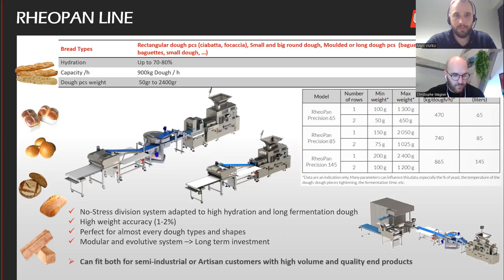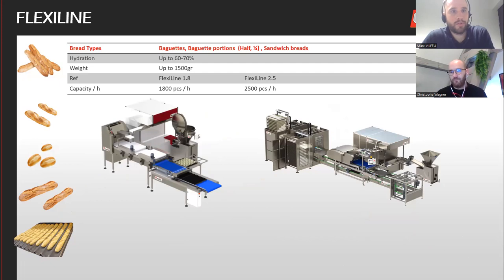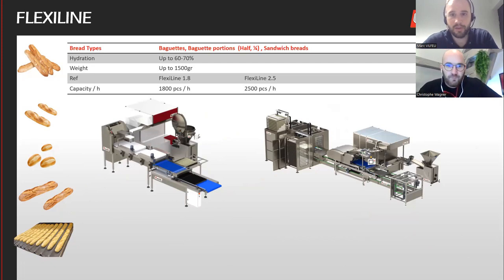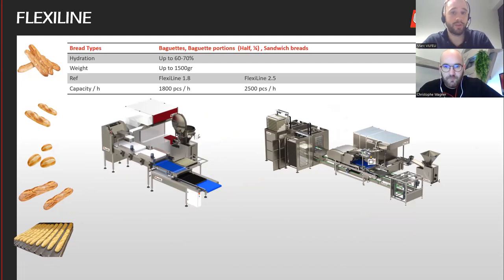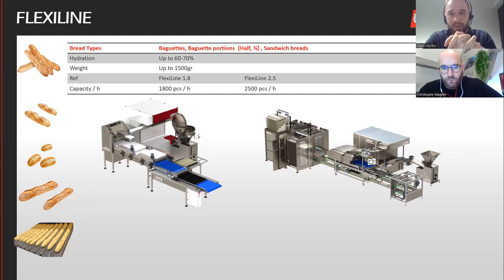Next is the Flexi Line — a line dedicated to baguettes, half-baguettes, and quarter-baguettes. You can see a list of products and some images on the left, and we have two different photos shown here.